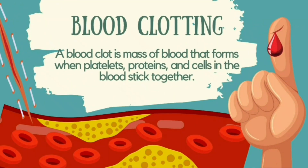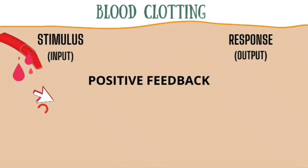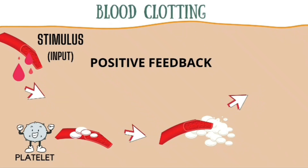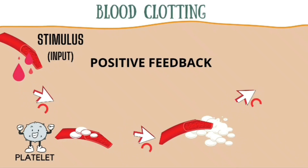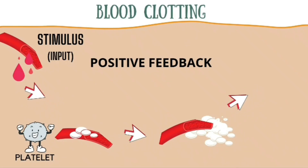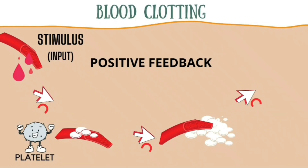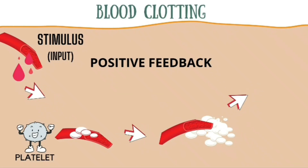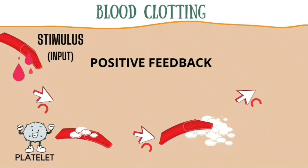Another example of a positive feedback mechanism is blood clotting. A blood clot is a mass of blood that forms when platelets, proteins, and cells in the blood stick together. The injured blood vessels in a bleeding wound release a substance to start blood clotting. Platelets attach to the injured site and release chemicals that attract more platelets. The accumulation of platelets results in more chemical release and more platelets are attracted to the location of the clot. The process continues until the clot is large enough to stop the bleeding.